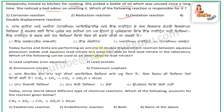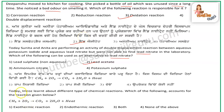The next question is: Sunita and Anita are performing an activity of double displacement reaction between aqueous potassium iodide and aqueous lead nitrate, but were not able to find lead nitrate.